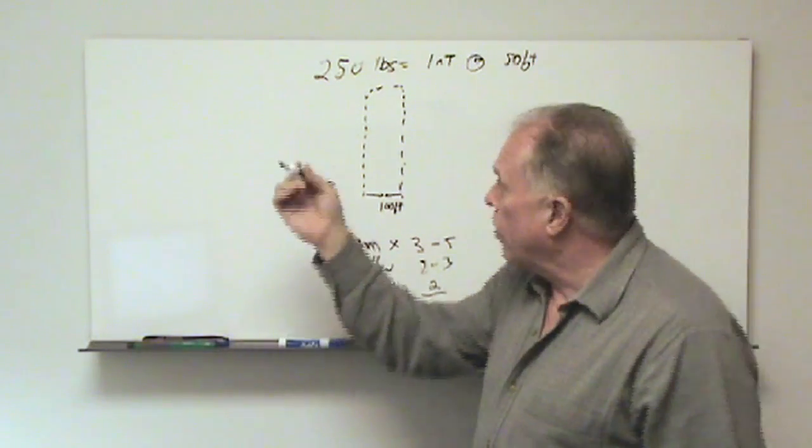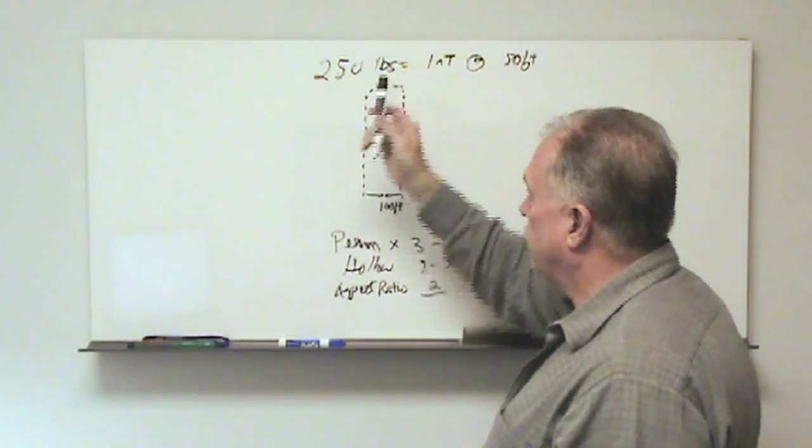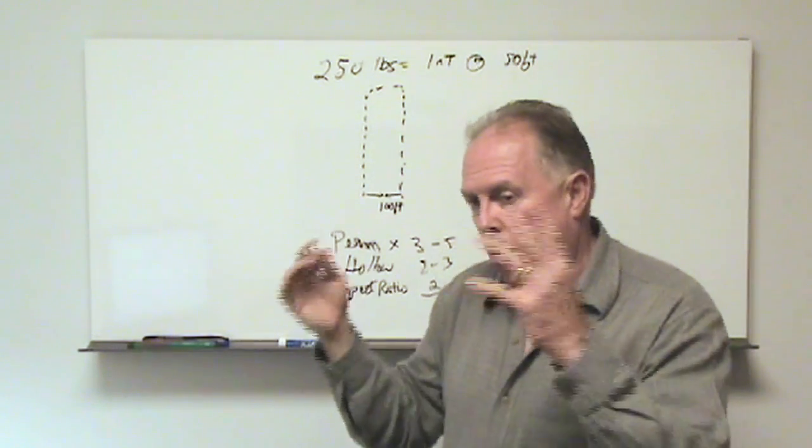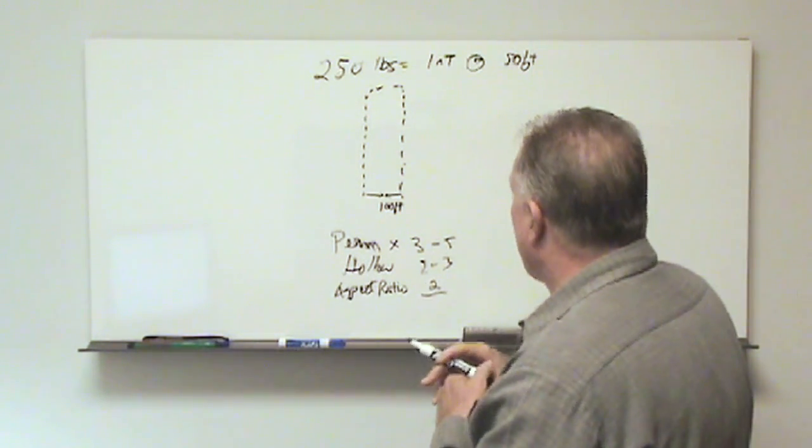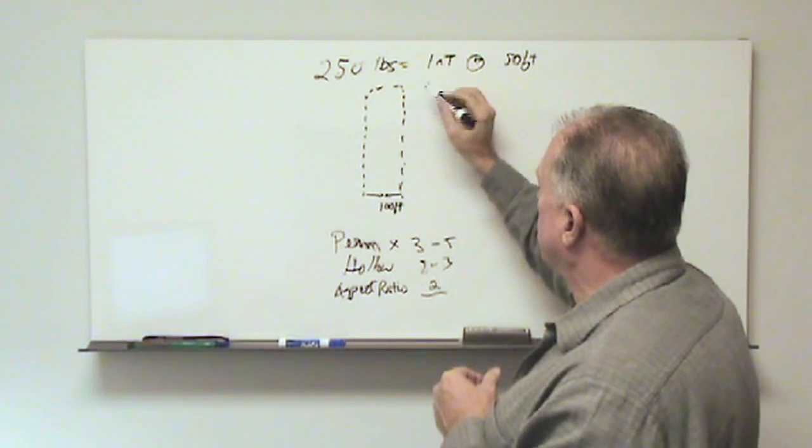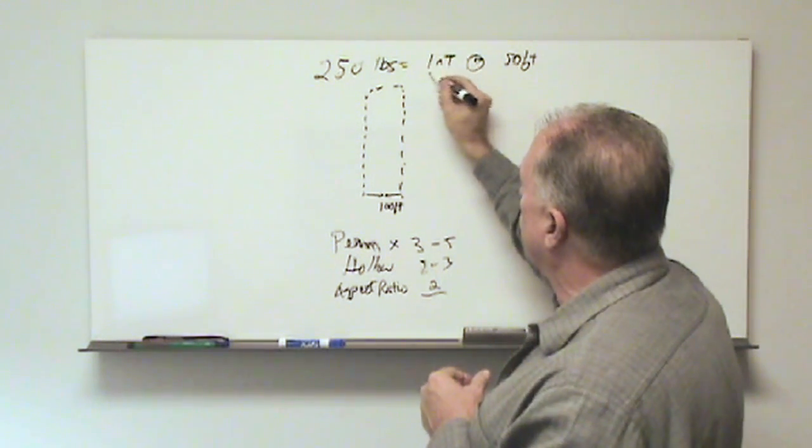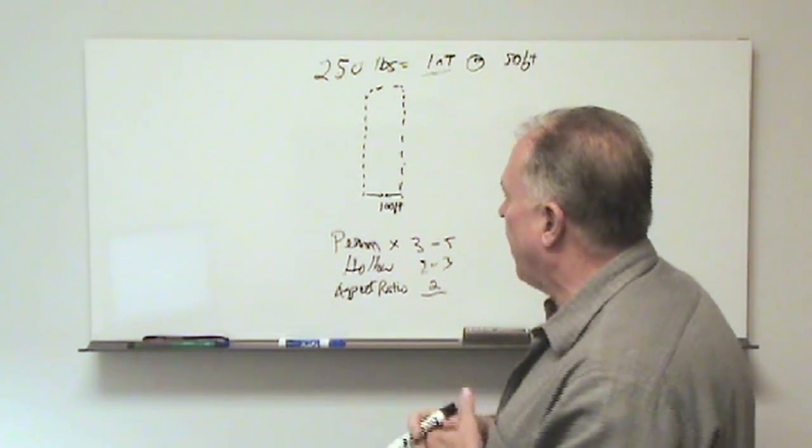So in our example, we're going to select 250 pounds of ferrous material as our mind experiment target. We know that we can get one nanotesla anomaly just purely from the induced field at 50 feet.